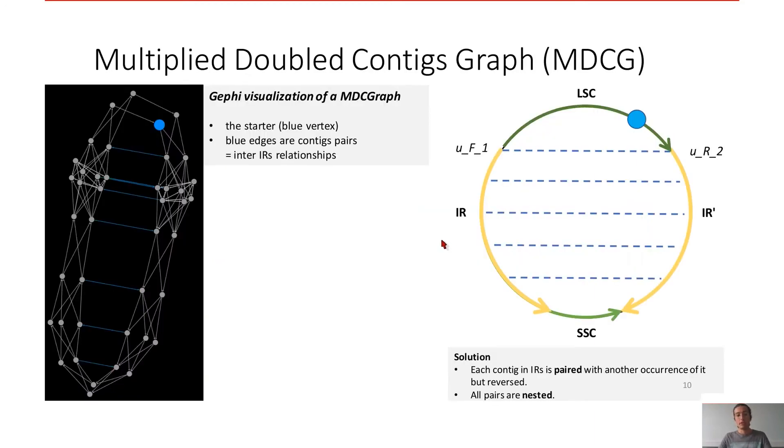So from the contig graph, we multiplied the contigs and we doubled them. We multiply them according to their multiplicities, their computed multiplicity. And we doubled them because the two DNA strands are sequenced together. And for one contig, we don't know from which strands he belongs, so we doubled it. So we have two orientations for one contig.